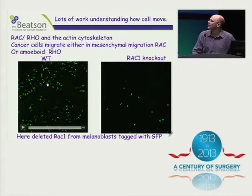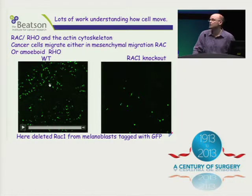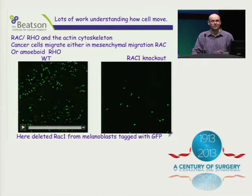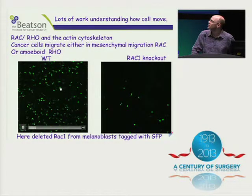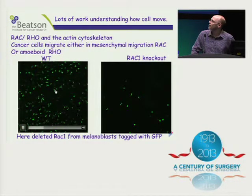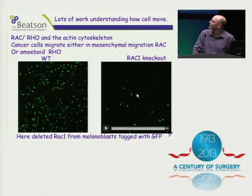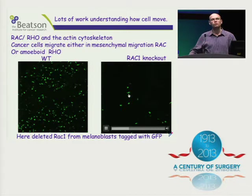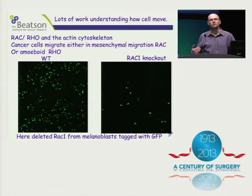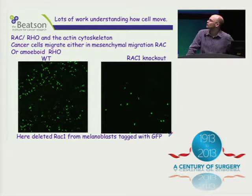We can do things in the lab — we can delete RAC and RHO from in vivo situations. We've been looking at melanoblasts in vivo, which migrate around the back of the mouse in a very similar way to melanoma. We can watch and score how wild-type melanoblasts migrate — they move very quickly around the back of the mouse. But if we knock out RAC, cells really do move much more slowly. There are a number of RAC inhibitors out there, so in terms of being able to stop migration of cells, we can quite easily do this in vivo.